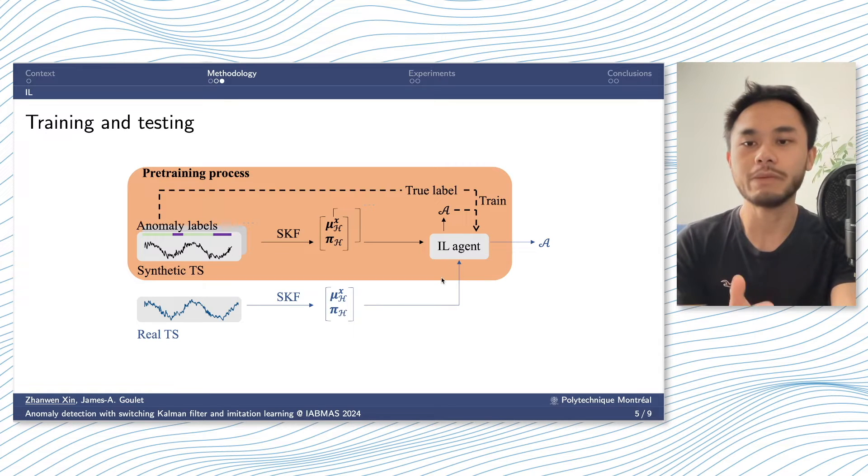Once the agent is pre-trained, we will test it on a real-time series following the same process. Except that here, we no longer have the anomaly labels. And the agents will decide an action based on different states that it sees.